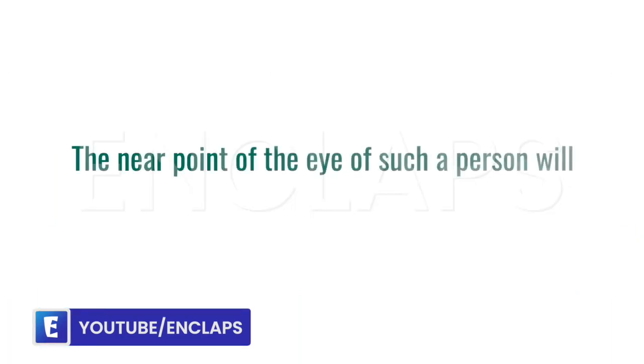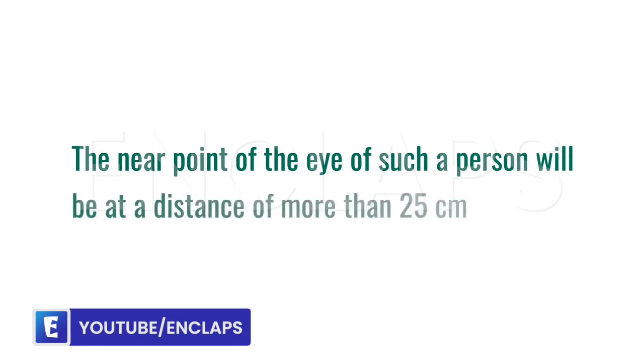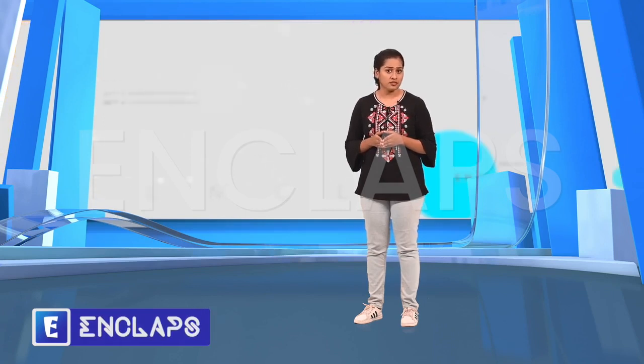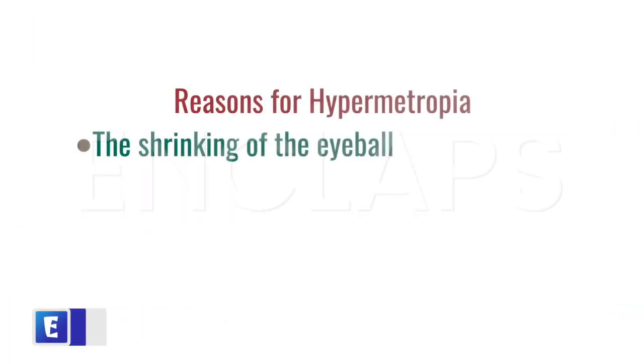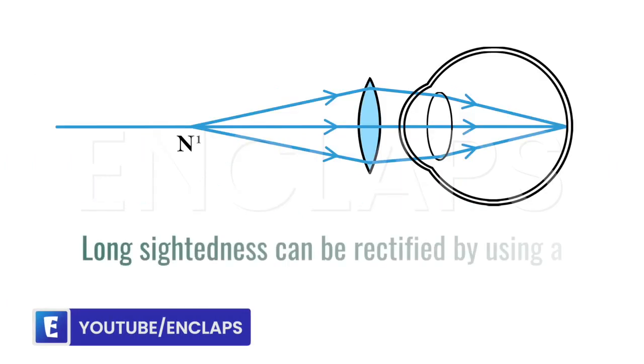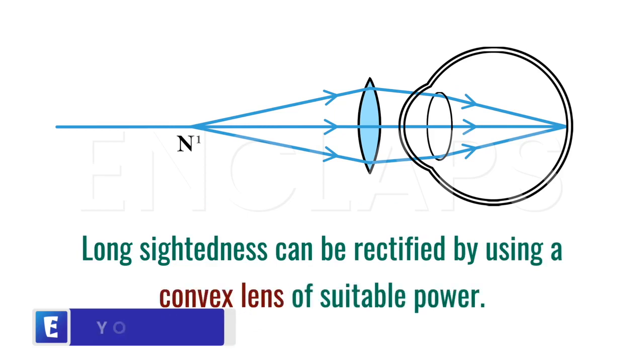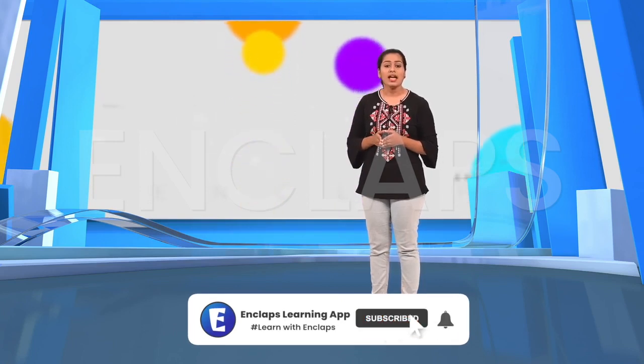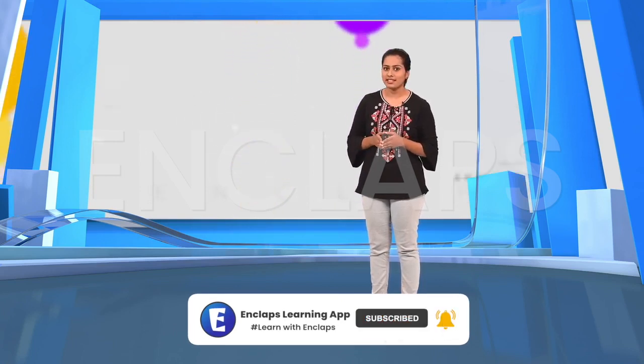The near point of the eye of such a person will be at a distance of more than 25 centimeters. What shall be the reason behind this defect? The shrinking of the eyeball and the decrease in the power of the eye lens can cause this. Long sightedness can be rectified by using a convex lens of suitable power.